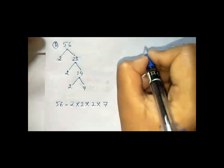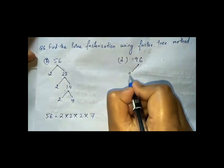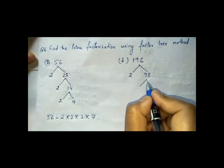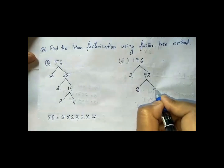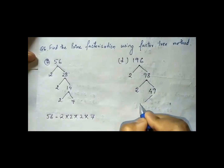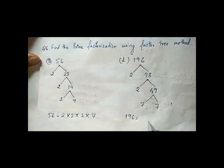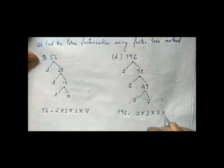Next let us solve question D for the number 196. We go with 2. Breaking it down step by step, we get the prime factors. So the prime factorization of 196 is 2 × 2 × 7 × 7.